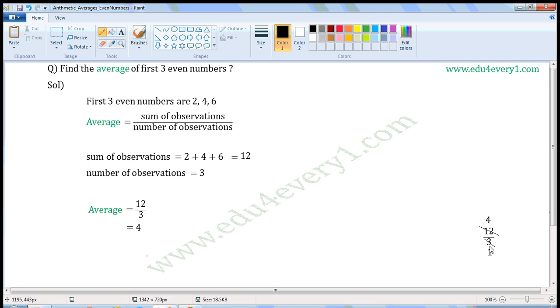3 when divided by 3, we get 1. 4 by 1, that is equal to 4. Average is equal to 4. Average of first three even numbers is 4.